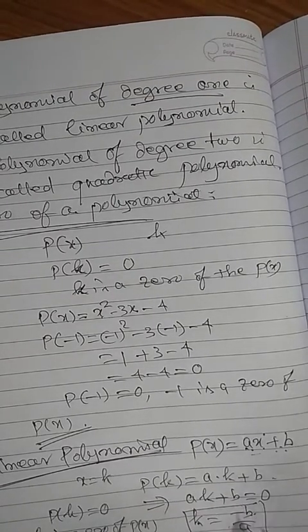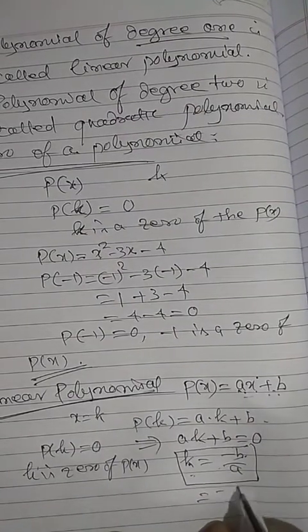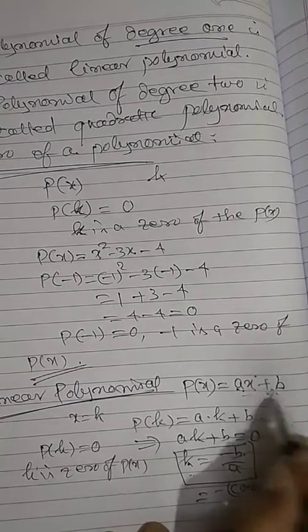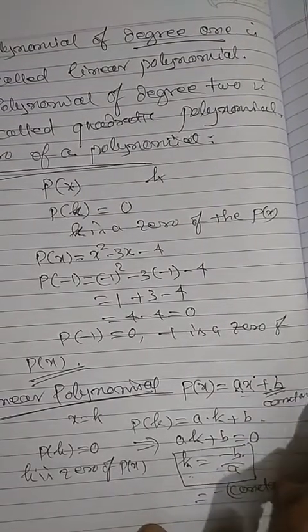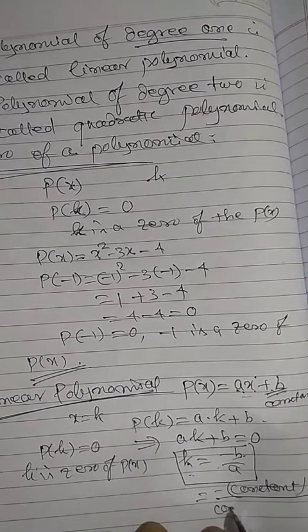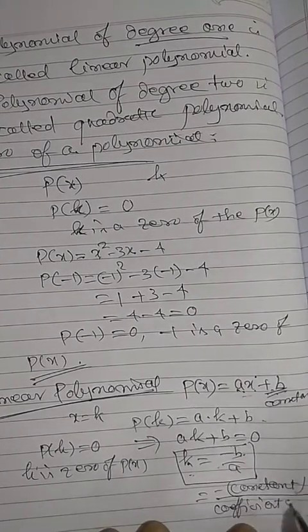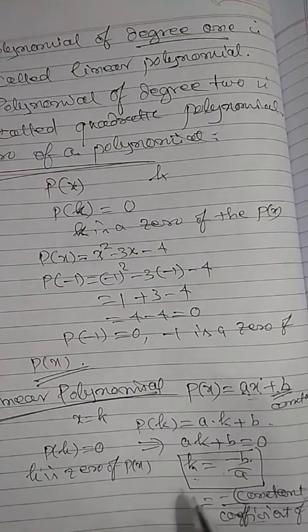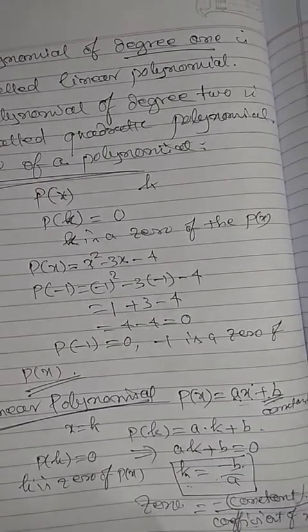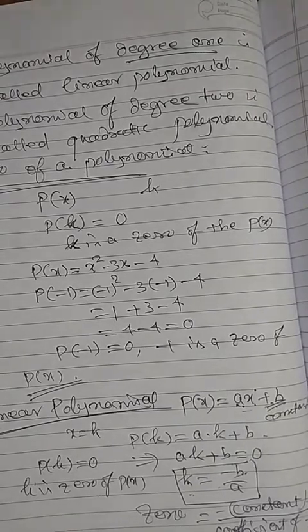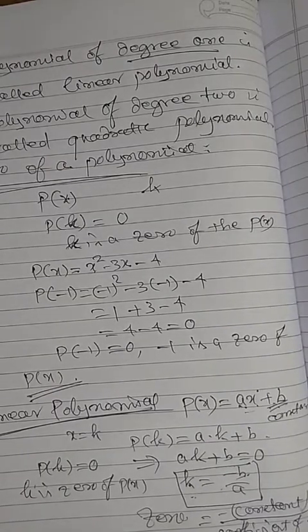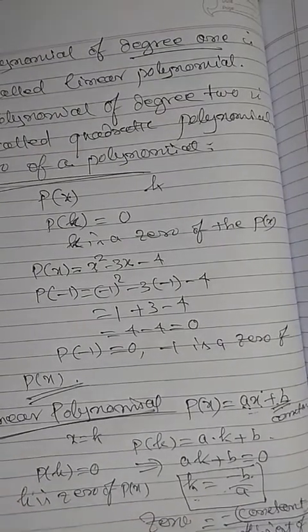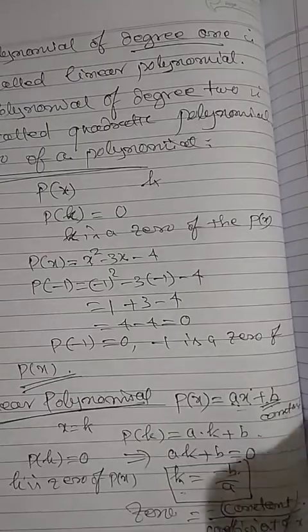So what is −b? b is the constant term, and a is the coefficient of x. So the zero equals: negative of the constant term divided by the coefficient of x. That is, k = −b/a, where P(x) = ax + b. This is the relation between the coefficients and the zero of the given polynomial.